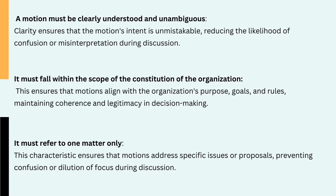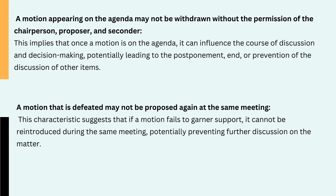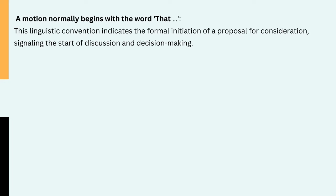4. It must refer to one matter only — this characteristic ensures that motions address specific issues or proposals, preventing confusion or dilution of focus during discussion. 5. A motion appearing on the agenda may not be withdrawn without the permission of the chairperson, proposer, and seconder. This implies that once a motion is on the agenda, it can influence the course of discussion and decision making, potentially leading to the postponement, end or prevention of the discussion of other items. 6. A motion that is defeated may not be proposed again at the same meeting — if a motion fails to garner support, it cannot be reintroduced during the same meeting, potentially preventing further discussion on the matter. 7. A motion normally begins with the word 'that' — this linguistic convention indicates the formal initiation of a proposal for consideration, signaling the start of discussion and decision making.